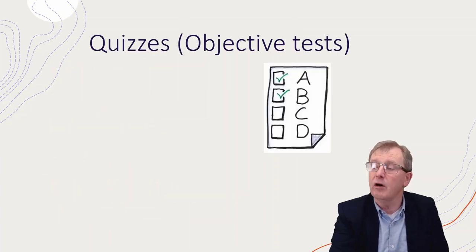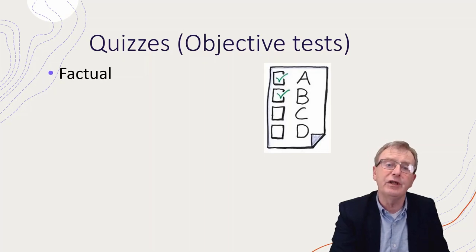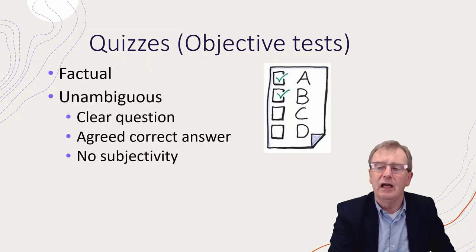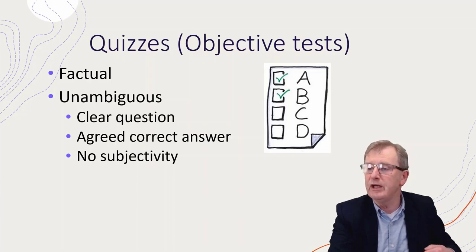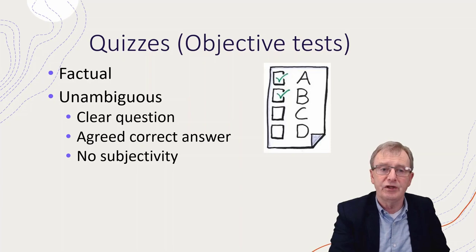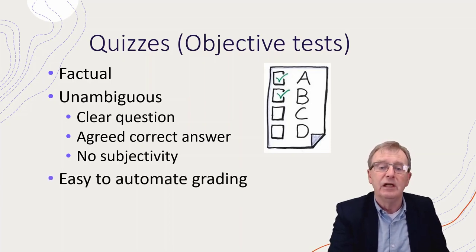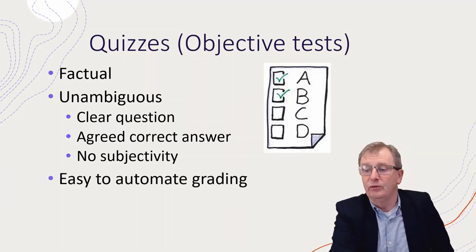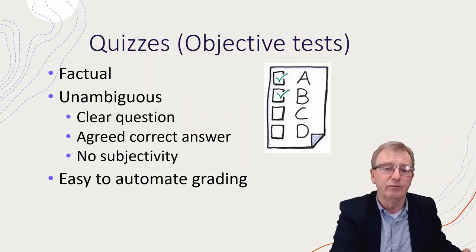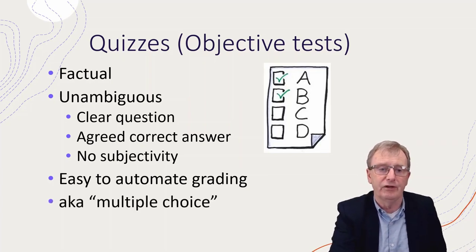Quizzes are properly known as objective tests, and they're objective because they tend to be factual and unambiguous — nobody disagrees about what the correct answer is, there's no subjectivity in it. The question has to be very clear for that to be true. This makes it easy to automate the grading — one right answer type of thing.